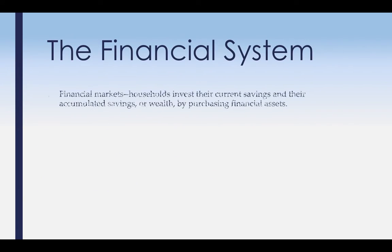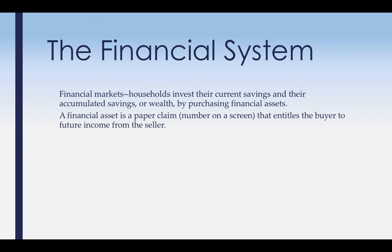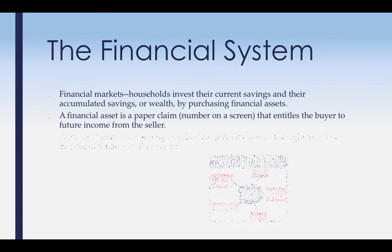The financial system: financial markets are places where household investors invest their savings by purchasing financial assets, and we'll talk about these throughout the rest of the PowerPoint. An asset is a claim — it's not anything necessarily tangible, especially now with computers — that entitles the buyer to income from the seller. So if I buy a bond, a stock, a mutual fund, or a CD, at some point in the future that person owes me money for what I bought.